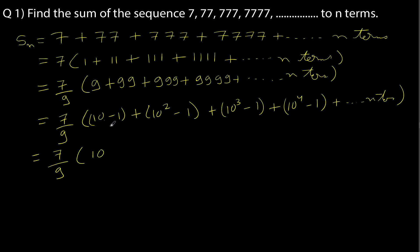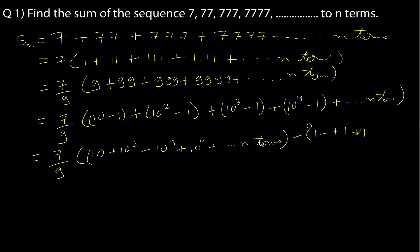Now you can separate these two parts. If you write 10, 10 squared, 10 cubed, 10 to the 4th — they form a geometric progression. So what we have is 10 plus 10 squared plus 10 cubed plus 10 to the 4th, going up to n terms. Then putting all the minus 1 terms together gives minus 1 minus 1 minus 1... n times, which equals minus n. So this part is already a GP, with common ratio r = 10 and first term 10, while the constant part is just n.